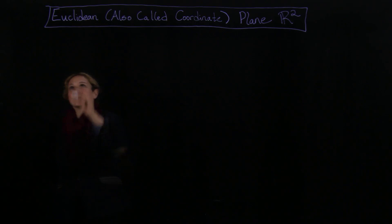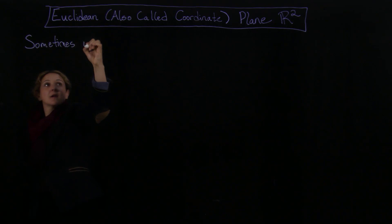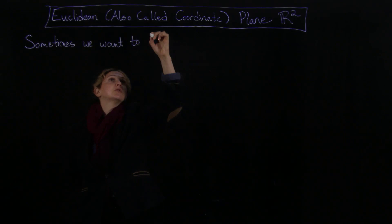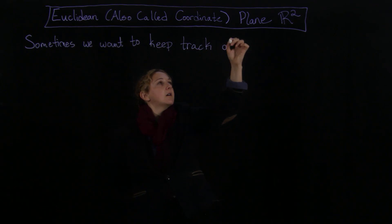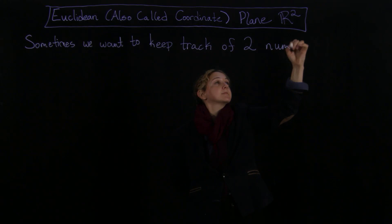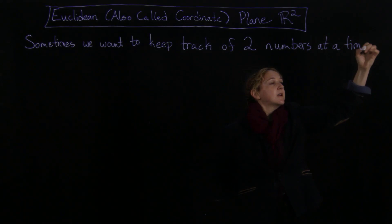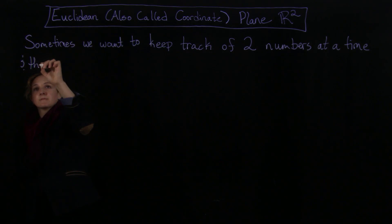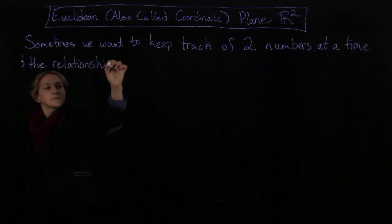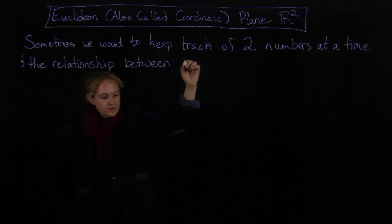So what is the point of this? Sometimes we want to keep track of two numbers at a time and actually the relationship between them, which is kind of recorded in the order, the relationship between them.